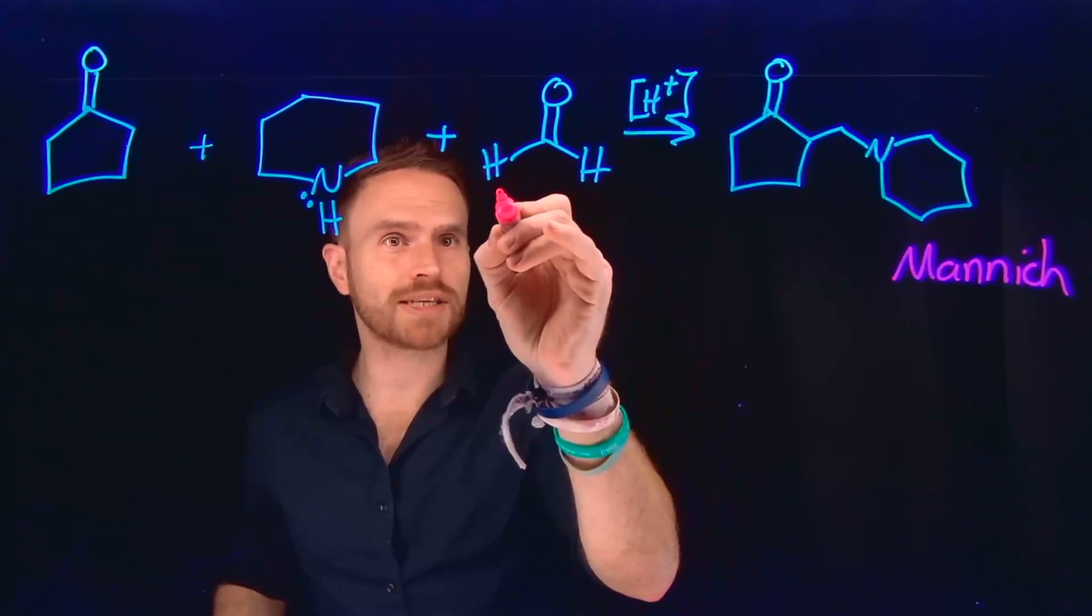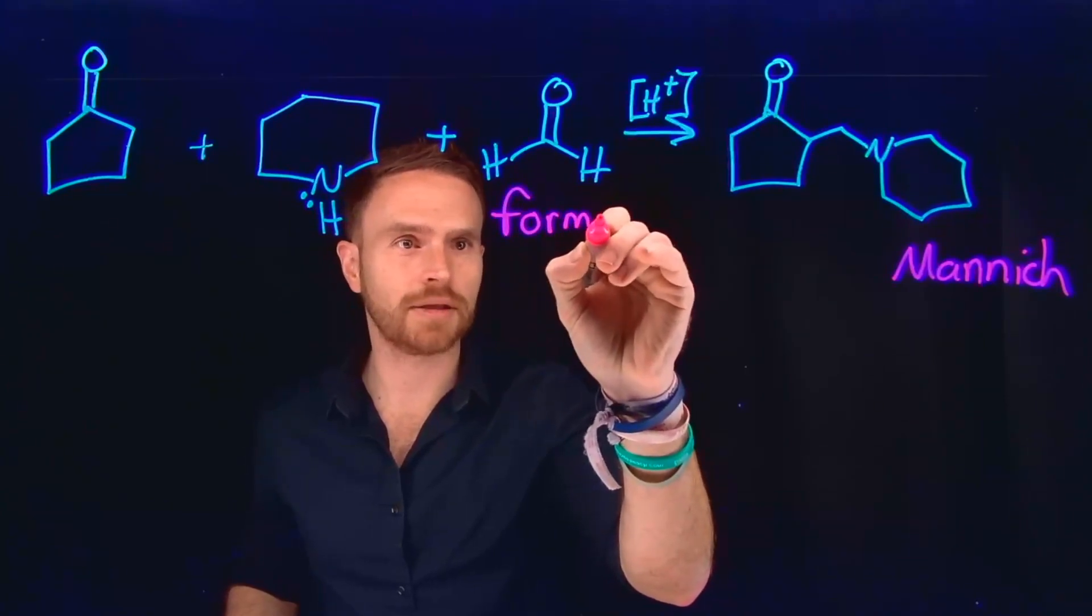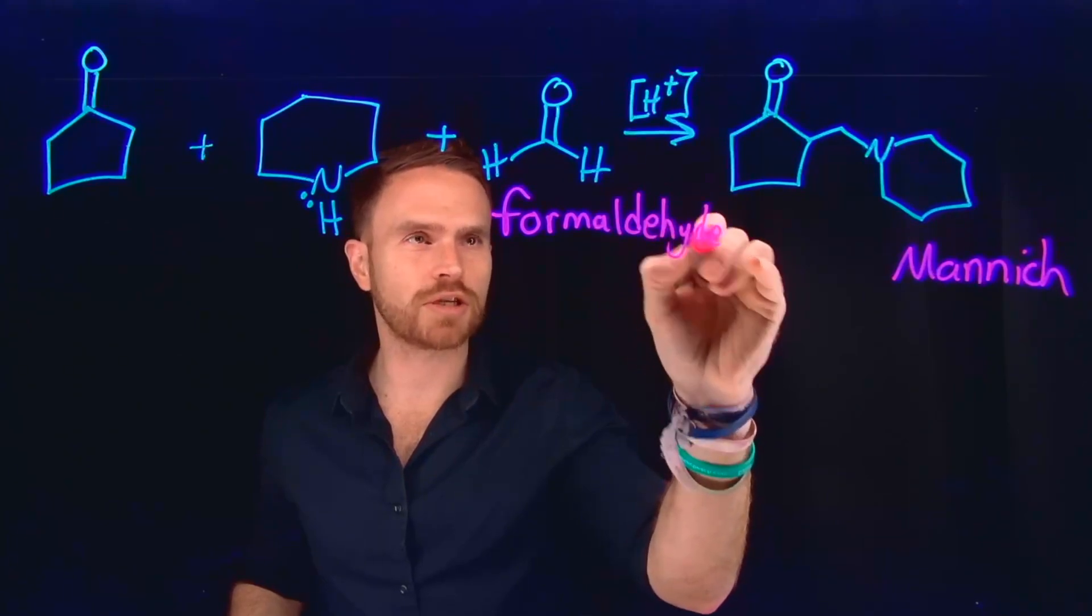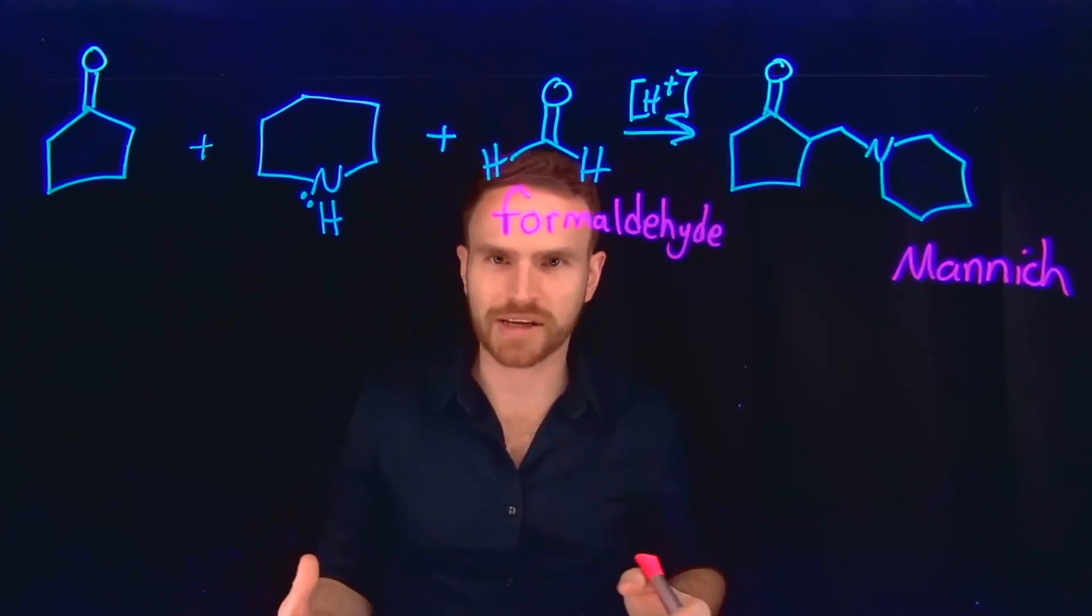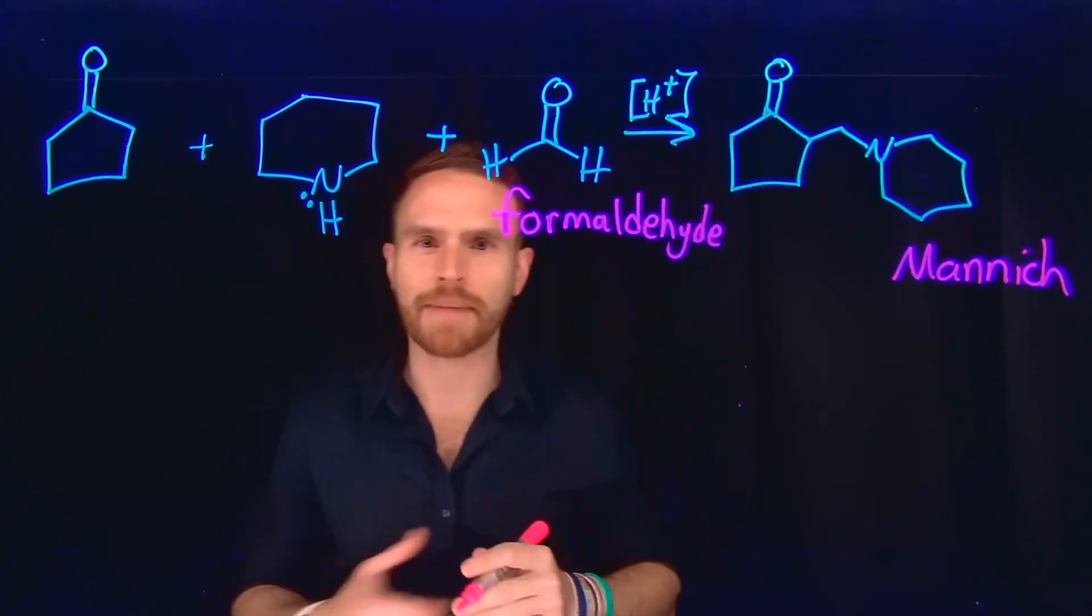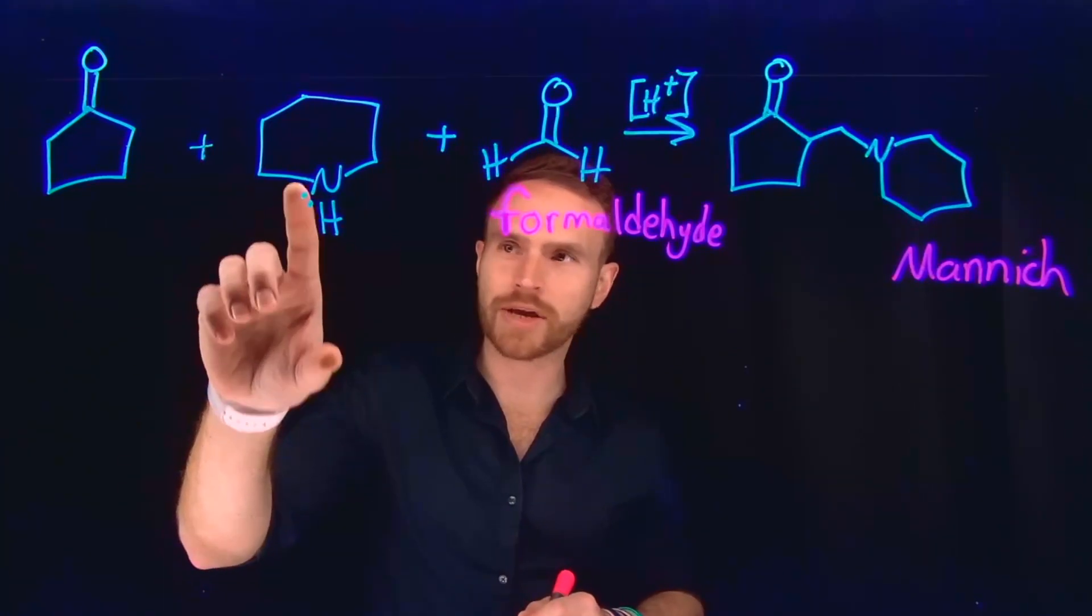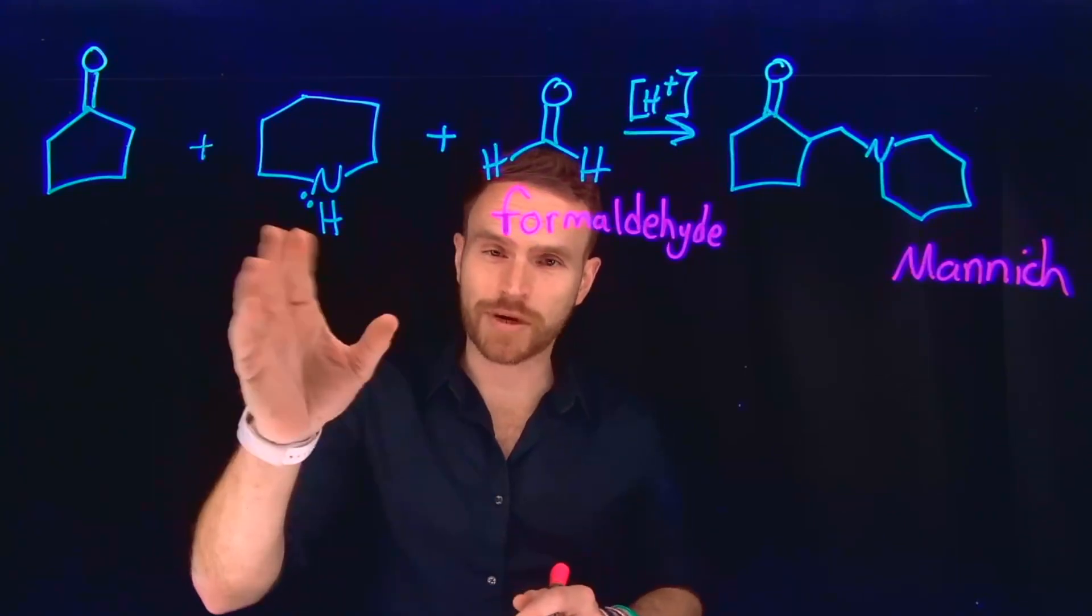And it always contains formaldehyde as one of the reactants. So this is called formaldehyde. And it usually uses acidic workup conditions or a catalytic amount of acid. And typically, the amino alkylation occurs via either a primary or secondary amine group like this reactant.